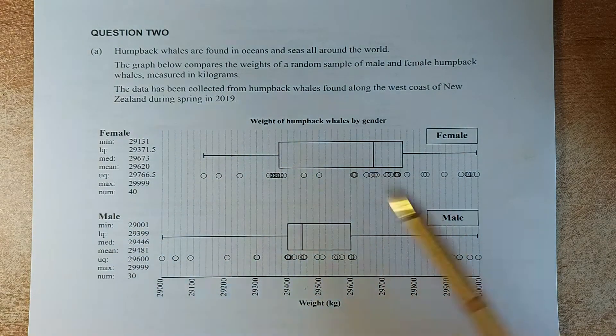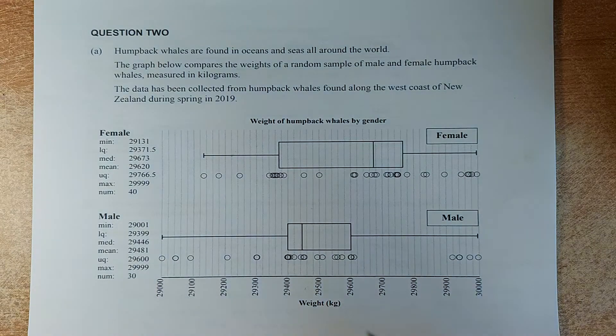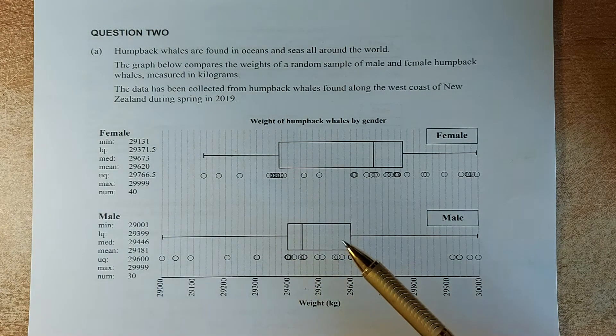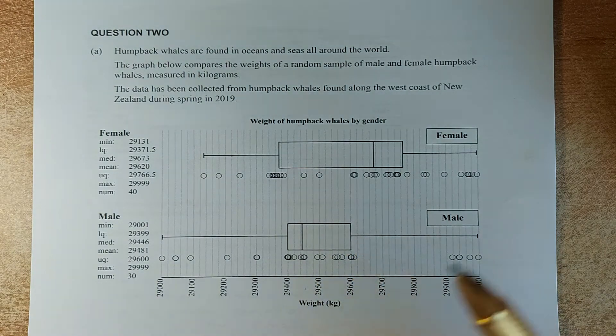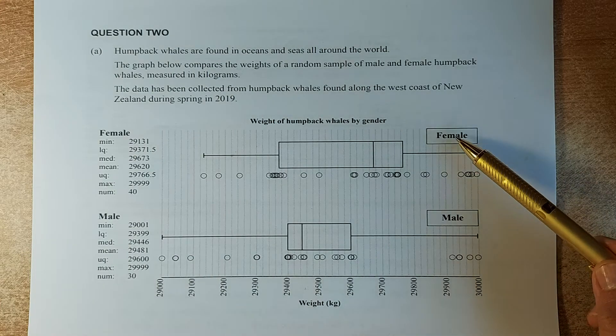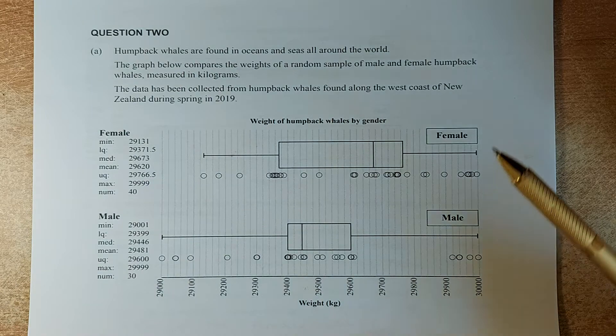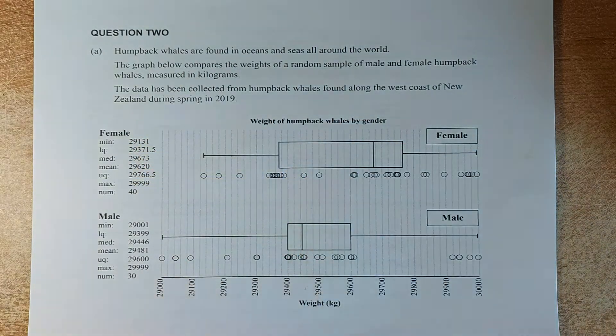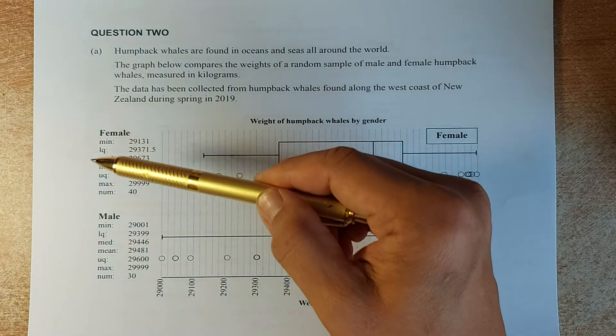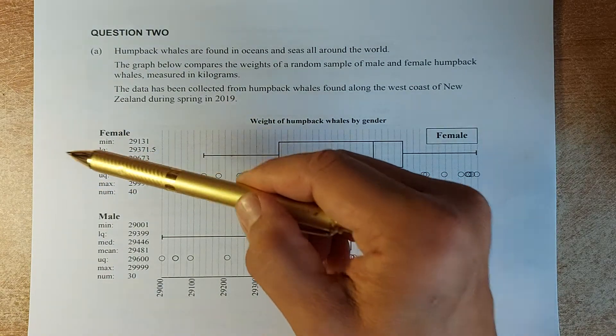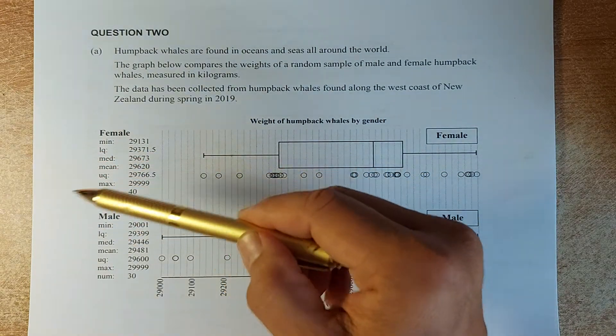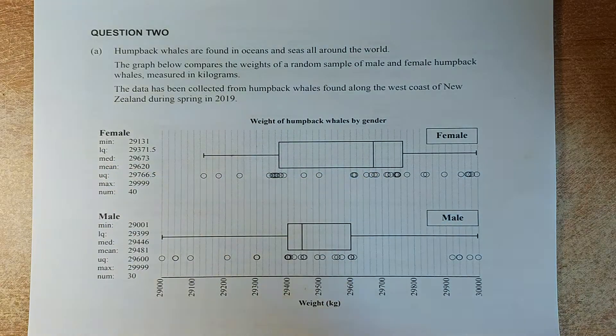So this is a box and whiskers graph, used to compare one numerical against one categorical variable. We have the female on the top part and the male at the bottom graph. The numbers on the left are all the statistics - you have the minimum, the lower quartile, the median, the mean, upper quartile, maximum and minimum for both the female and the male.